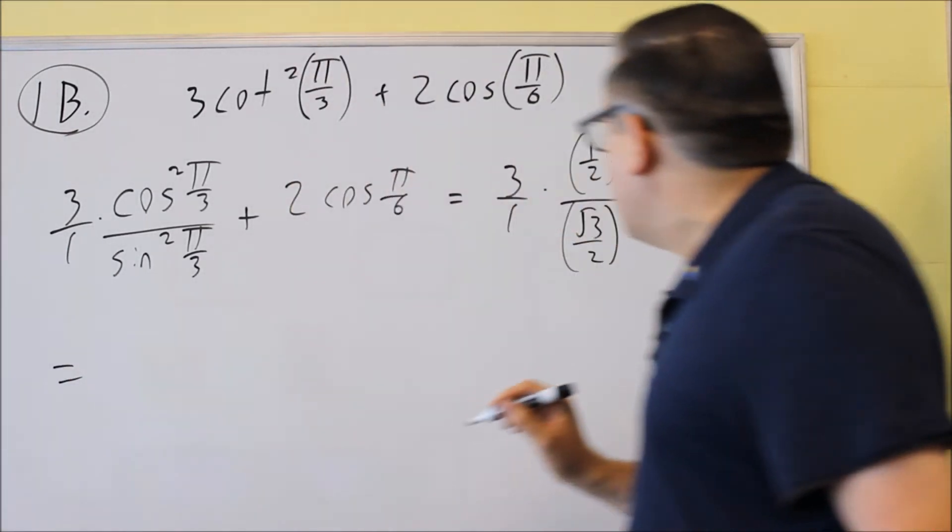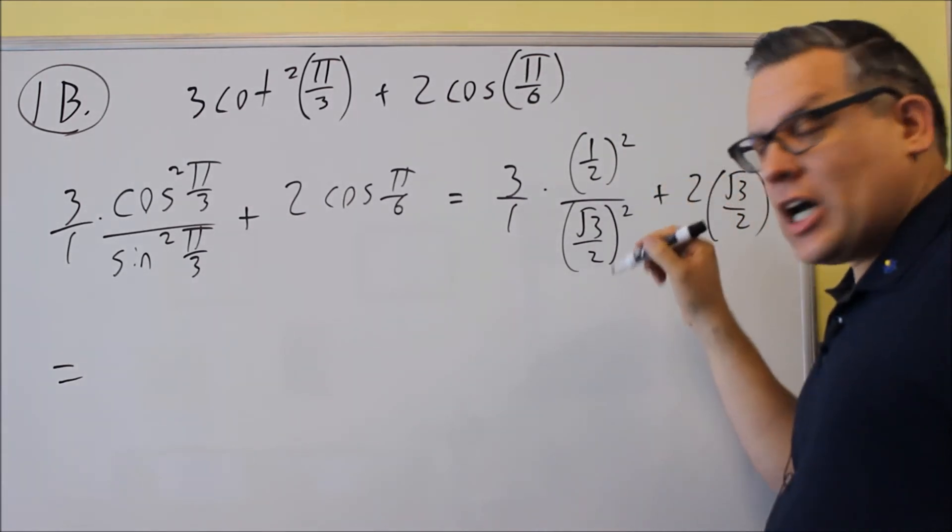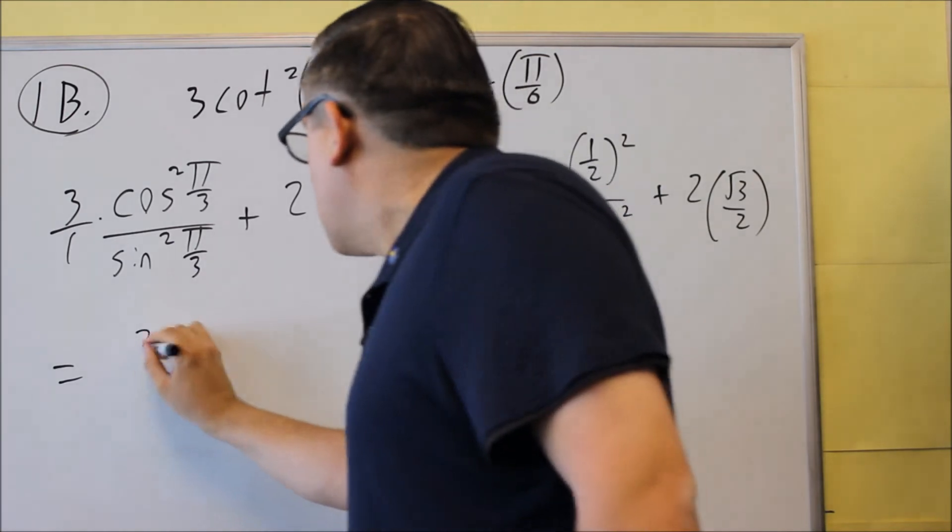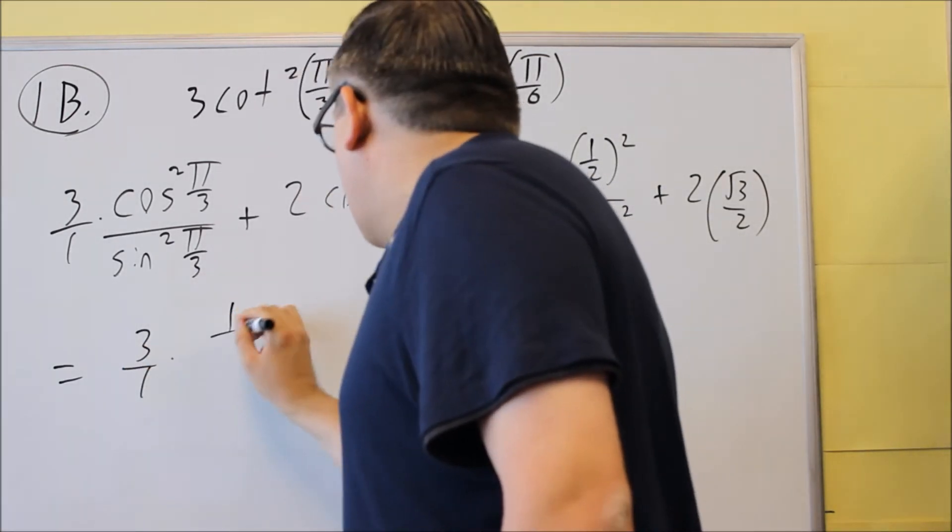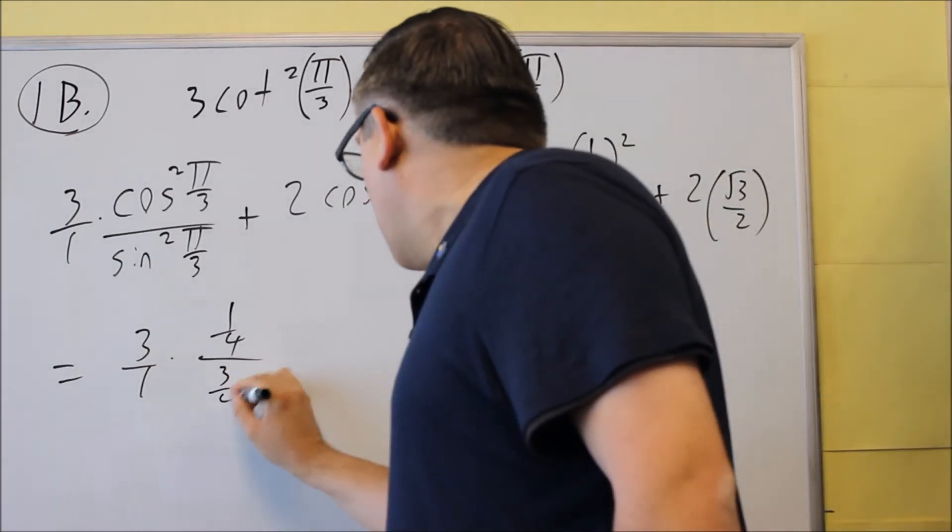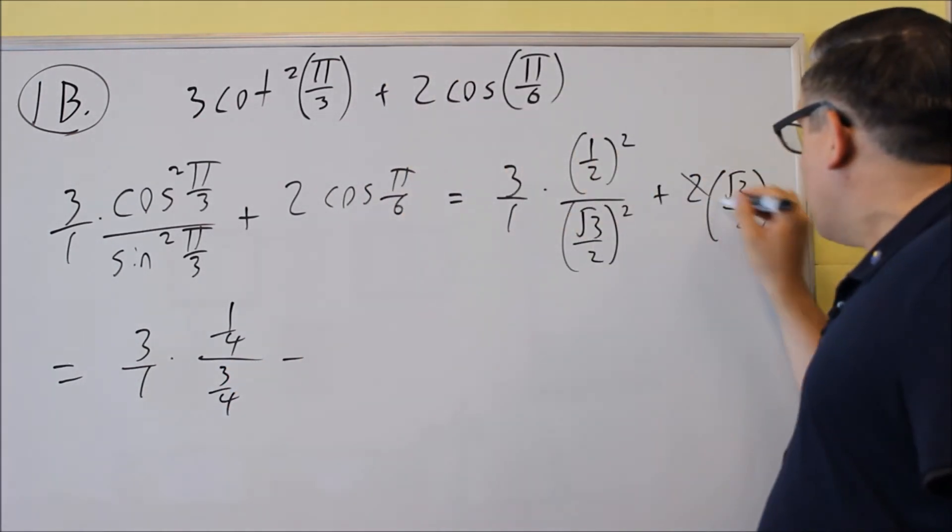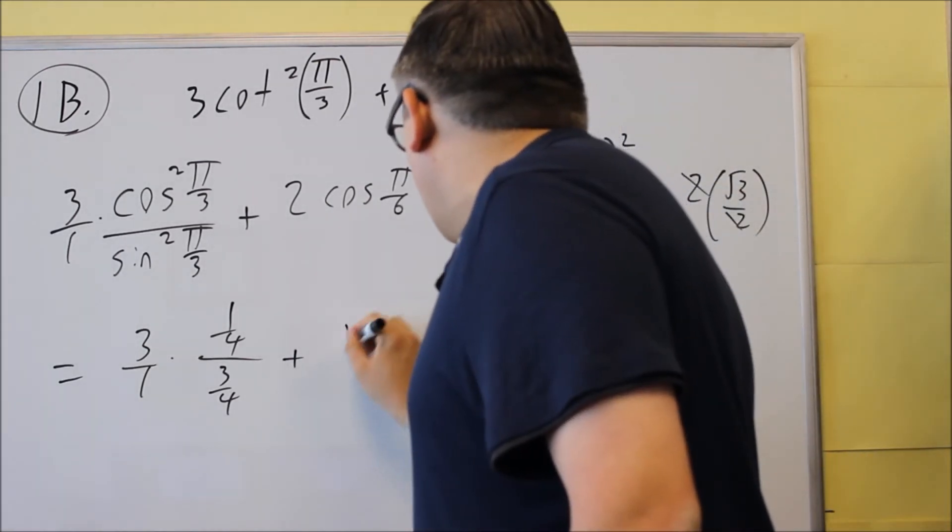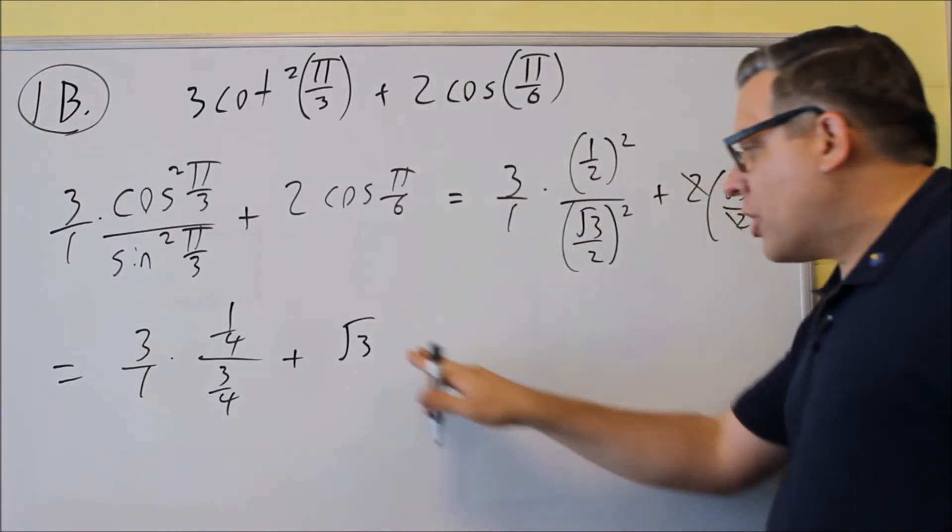So next we're going to square the top and bottom, square the top of each of these fractions here separately. So 3 over 1, the top one will turn into a 1 fourth, the bottom one is going to turn into a 3 fourth. And then the 2's here are going to cancel out and you just get plus square root of 3 and there's something more we can do with that one.